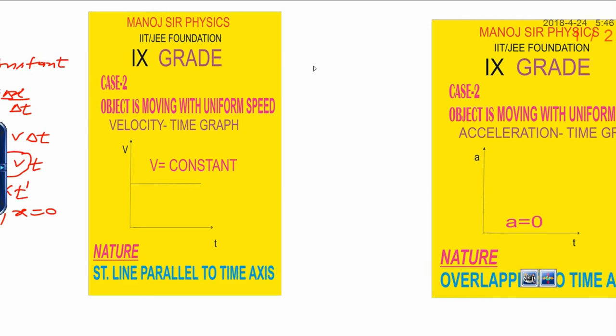If speed is constant, it means v is constant. If v is constant, whatever the case, v equals, suppose, 2 meters per second. But time is continuously changing: 1 second, 2 seconds, and so on.